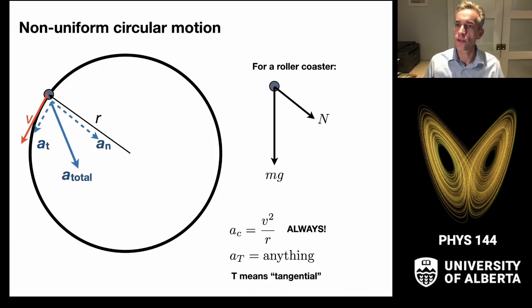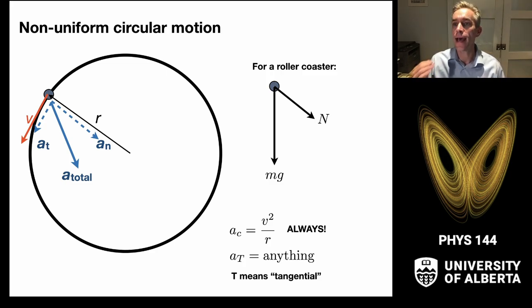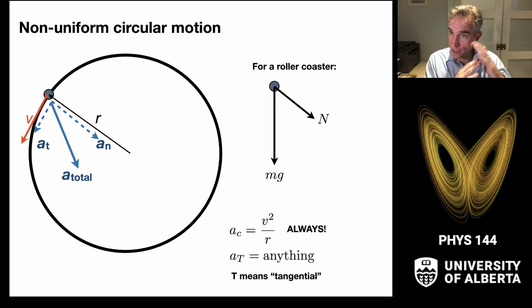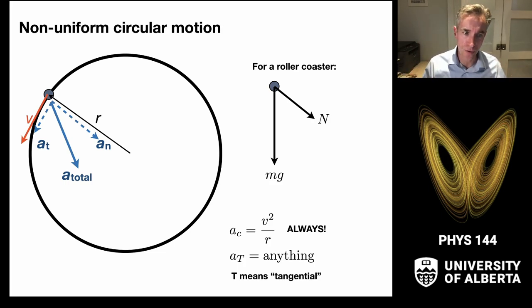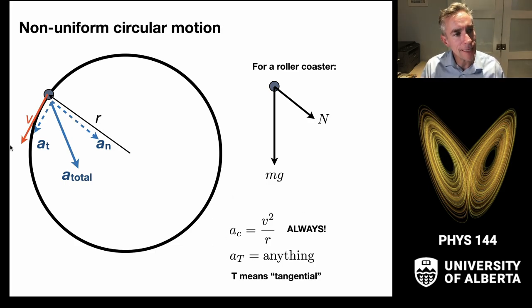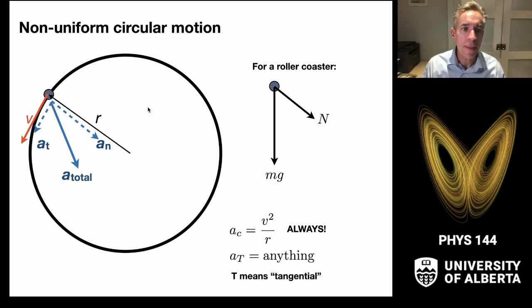If we think about the roller coaster on the surface of the track, there are a couple of forces acting on it. There is a normal force as the track pushes on the roller coaster, keeping it accelerating towards the center of the circle. There is also a weight. These two forces create tangential and normal accelerations. The normal acceleration produces the centripetal acceleration v squared over r, while mg provides a component of tangential acceleration, speeding the object up as it moves down.